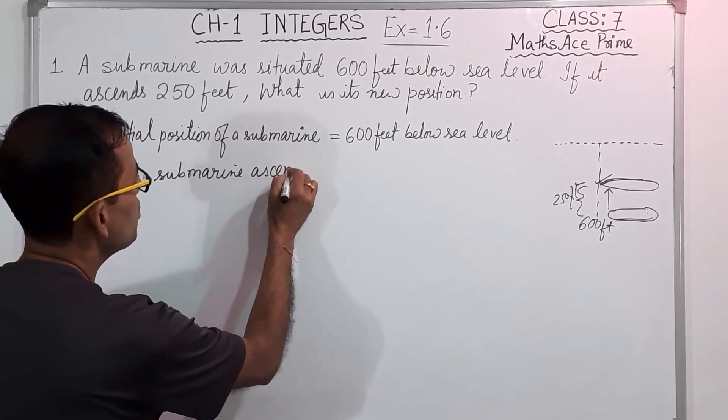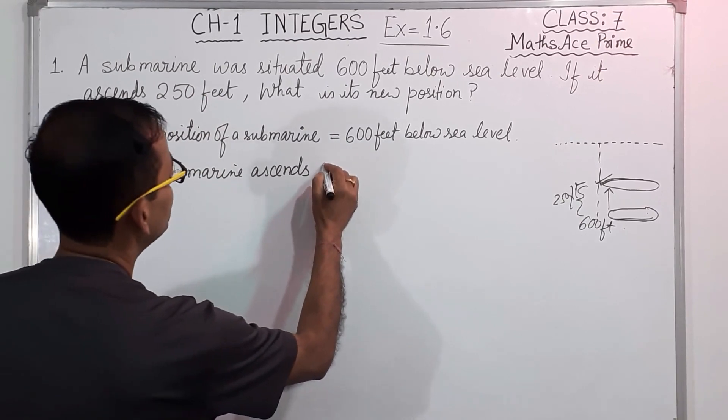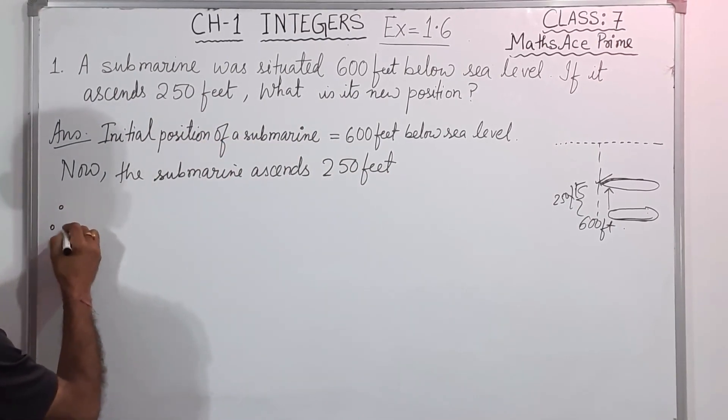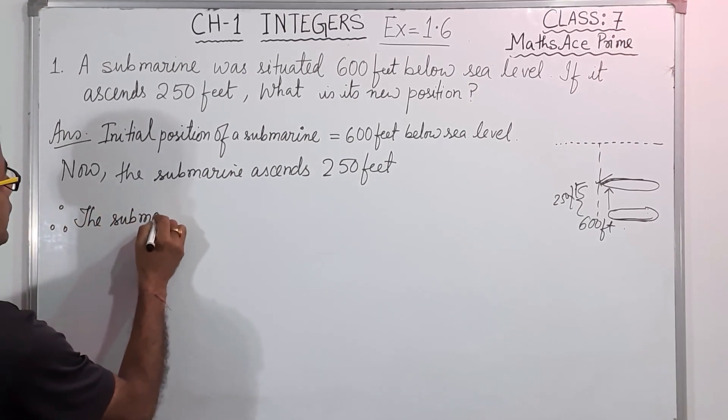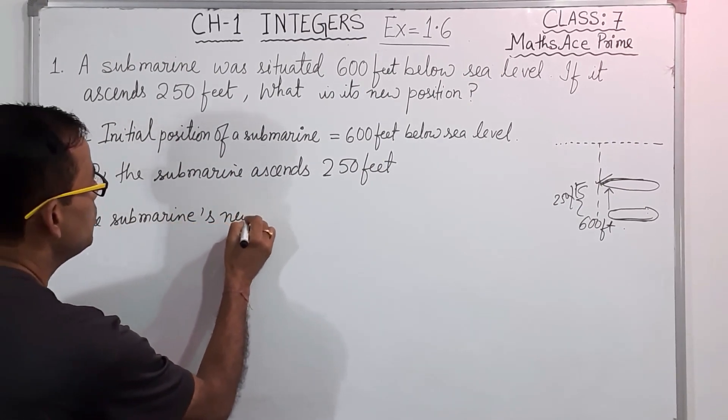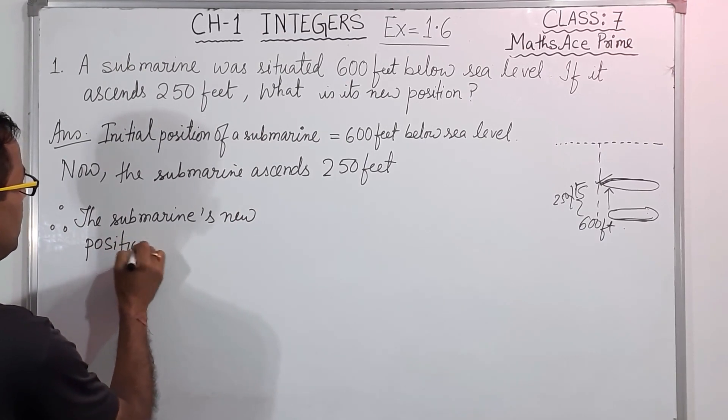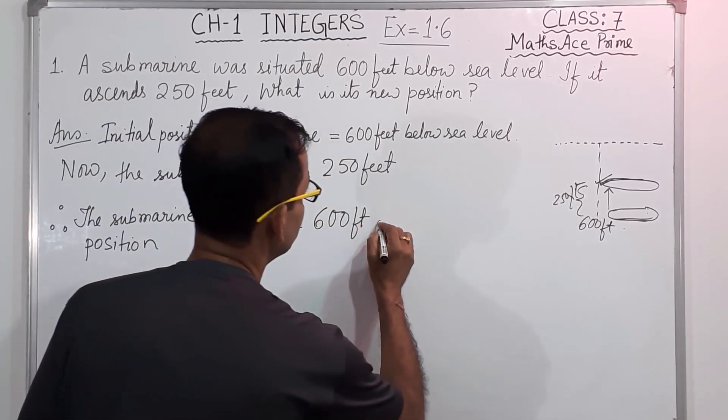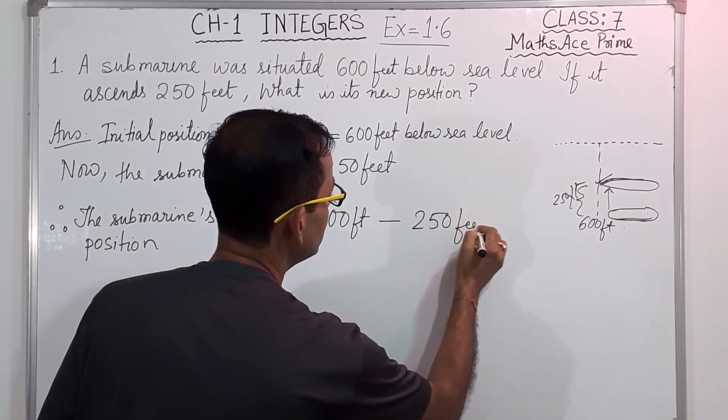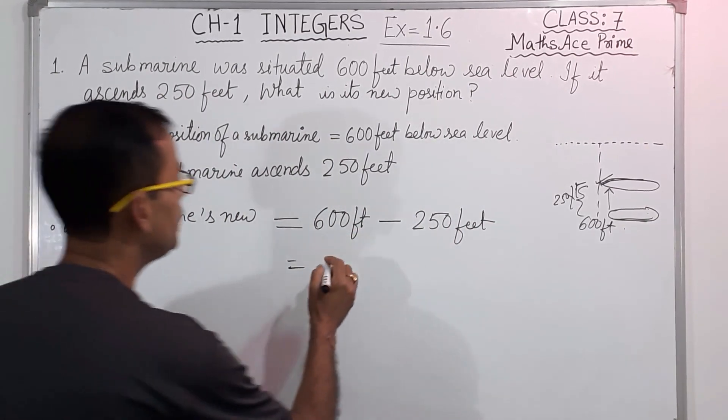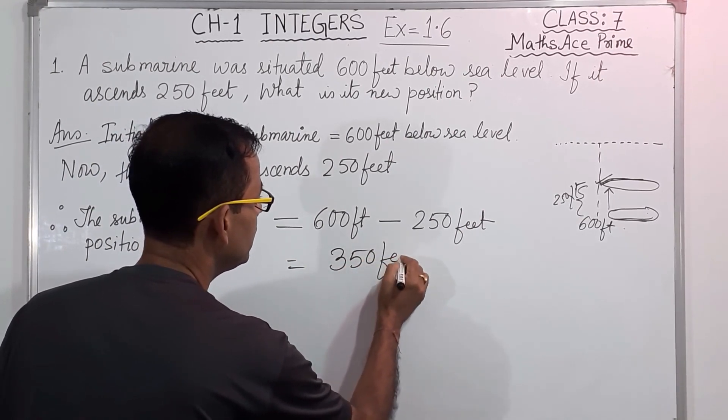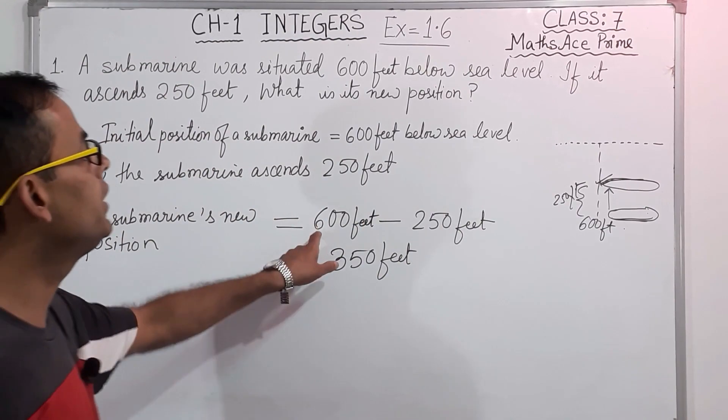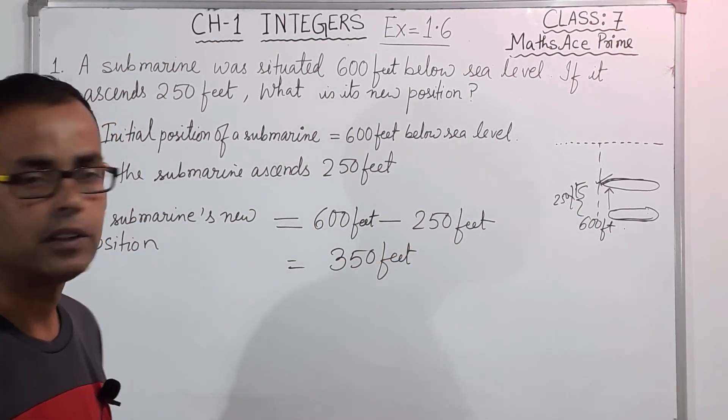Okay, so let us start solving, very easy one. So first the submarine position was where? At 600 feet. So we will write initial position of a submarine is equal to 600 feet below sea level. Now the submarine ascends, that means goes up, 250 feet. What is its new position? So therefore, the submarine's new position is equal to 600 feet minus 250 feet. And how much it is? 600 minus 250. 350 feet. You can also write ft. So 600 feet minus 250 feet, so 350 feet. Clear? If you cannot do it directly, you can do it here. 600 minus 250. See? 0 minus 0, 0. And then you borrow here 5, 10. So 5 comes and here comes 3. So 350 feet below sea level. Clear?